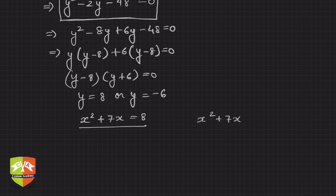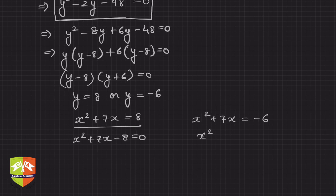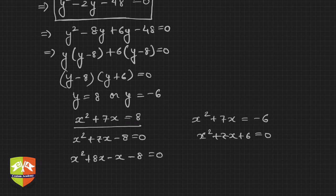First equation is x²+7x-8=0, and the second equation is clearly x²+7x=-6, or x²+7x+6=0. Let's solve both of them. It should be a cakewalk now. Hence it is x²+8x-x-8 equals to 0, or for this you can write x²+x+6x+6 equals 0, splitting the middle term.